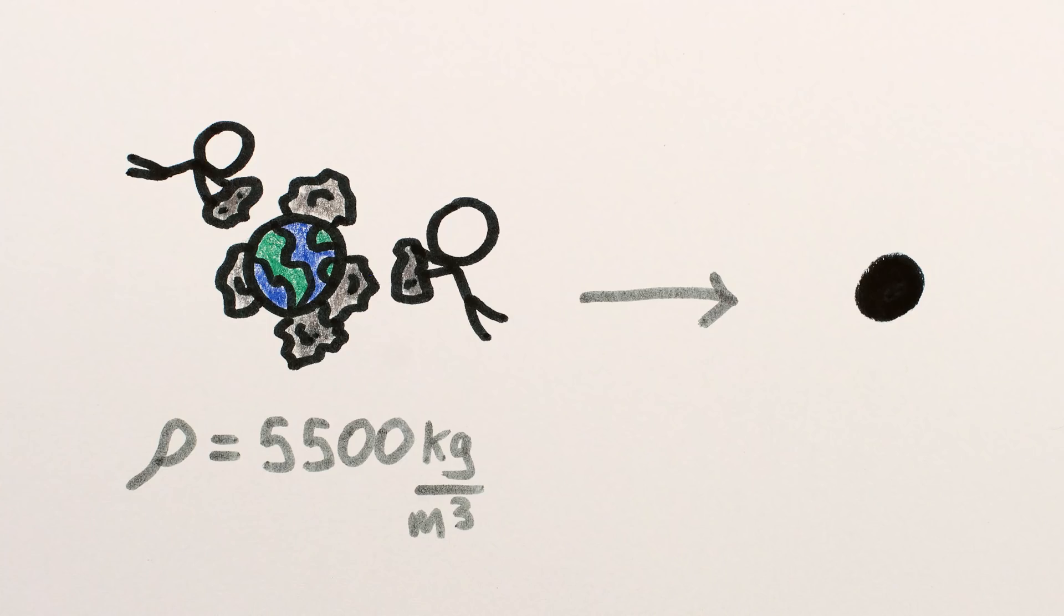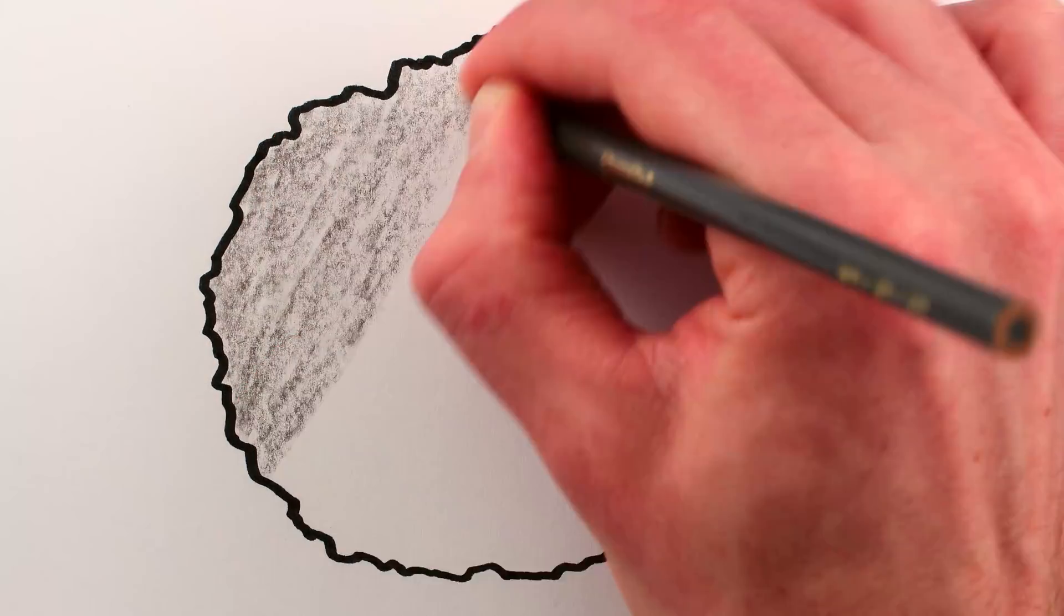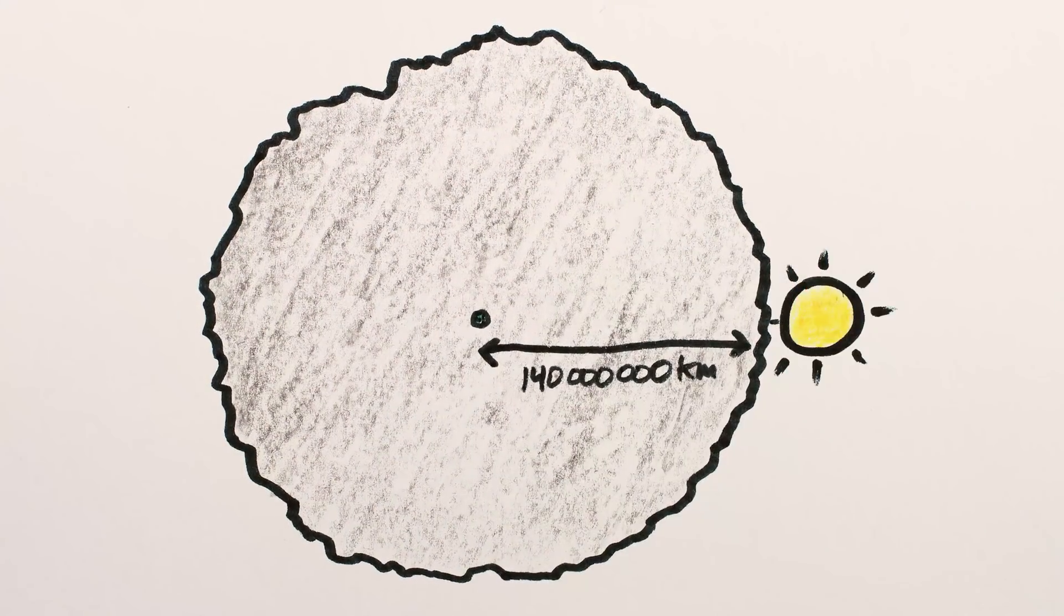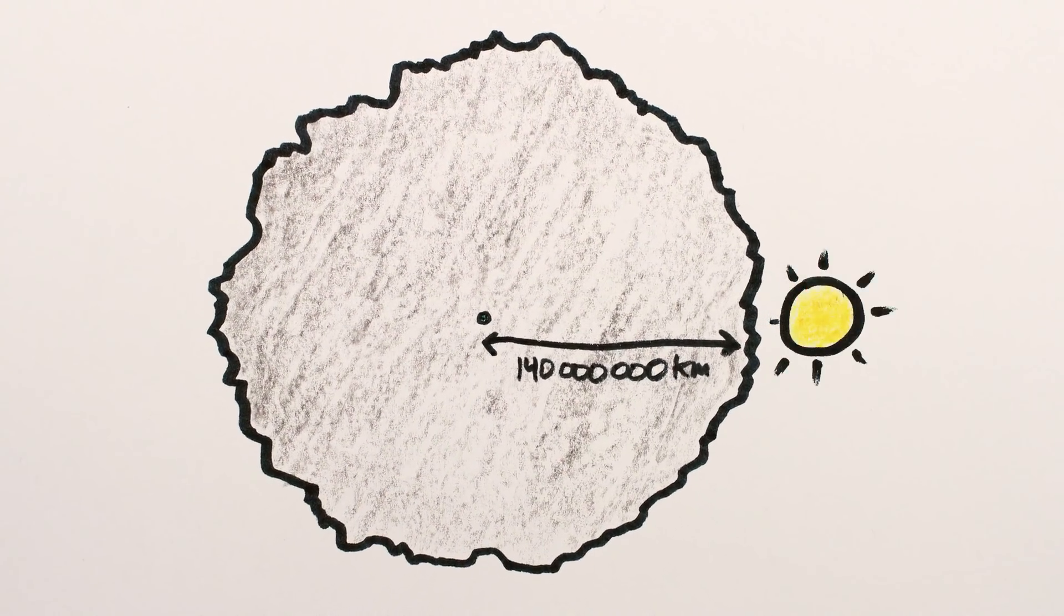For the Earth, which has the density of rock, this tipping point occurs at a size of around 140 million kilometers, basically the distance to the Sun. Though to be honest, rock definitely isn't strong enough to sustain the pressure necessary, and we'd almost certainly collapse into a neutron star long before getting that big.